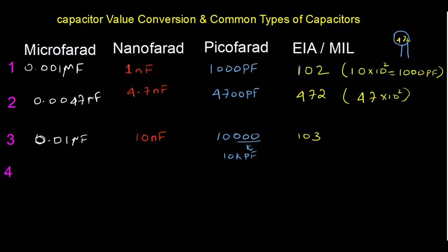Fourth example: we are given the EIA code 104. This means 10 × 10⁴ = 100,000 pF, which is 100 kpF. The first two digits are 10, followed by four zeros. So 104 = 100 kpF.